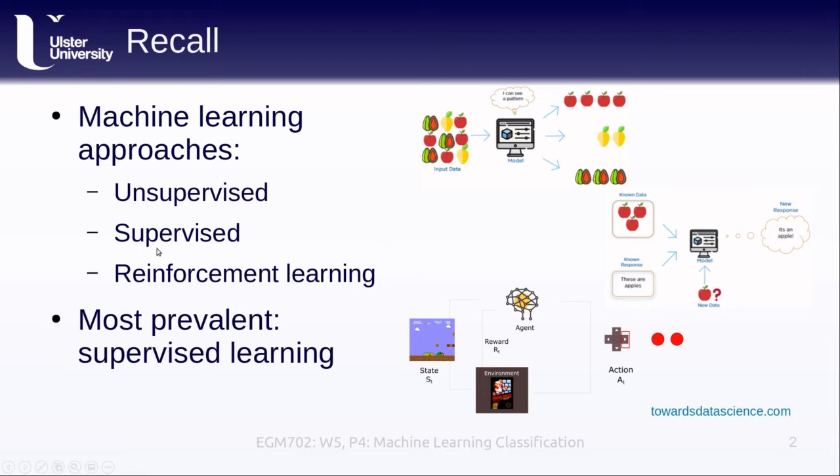With supervised machine learning, we provide the machine with labeled input data that it then uses to figure out the function or pattern for classifying that data, so that when we provide it with new data it hasn't seen before, it knows how to classify it.